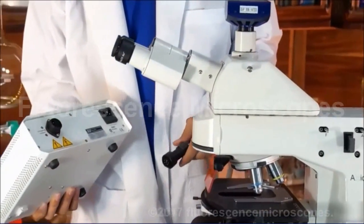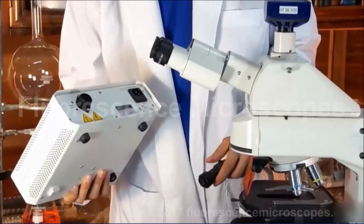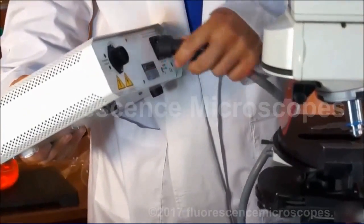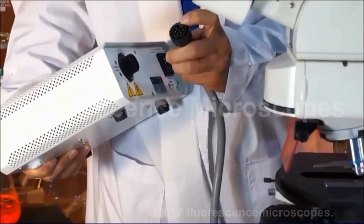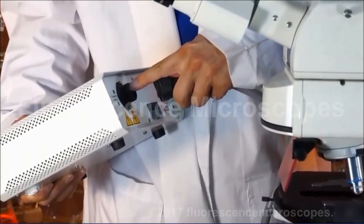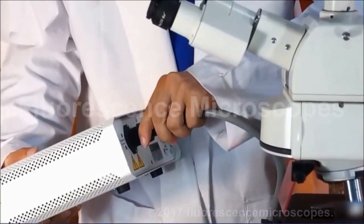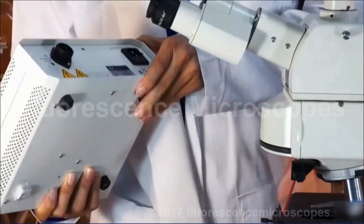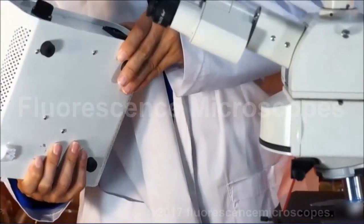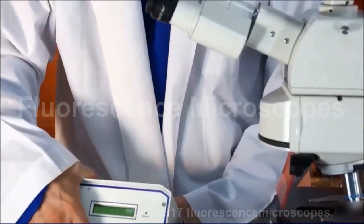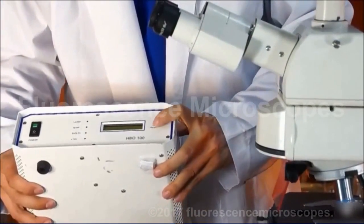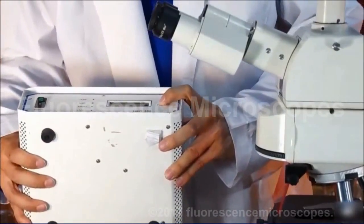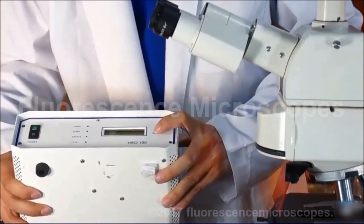So the 100 watt HBO Mercury power supply, simply line up the little notch with the notch here. Push it in and rotate it. This particular one is auto volt. It's got a reset button. You can press a small pin inside to reset it to zero.